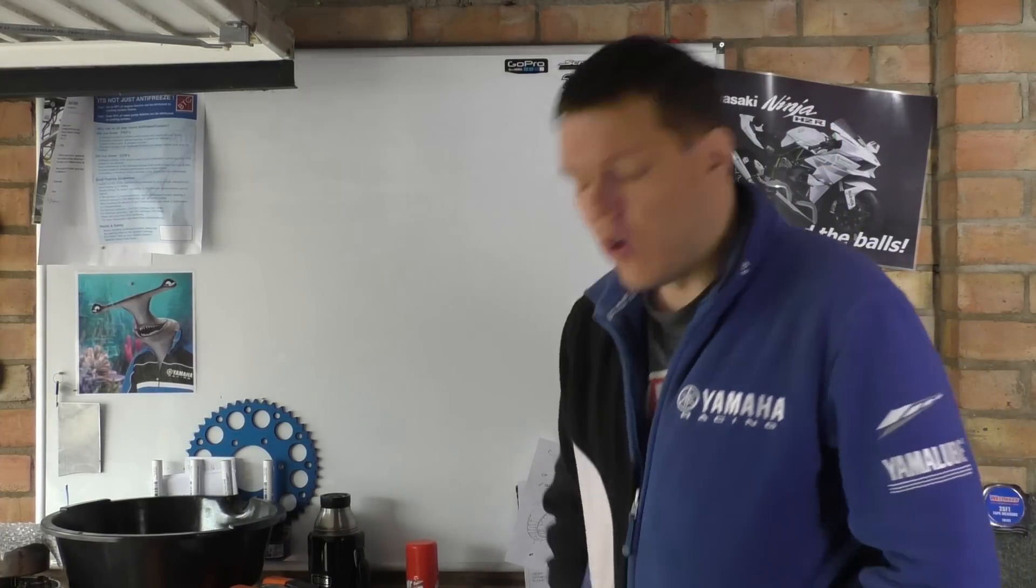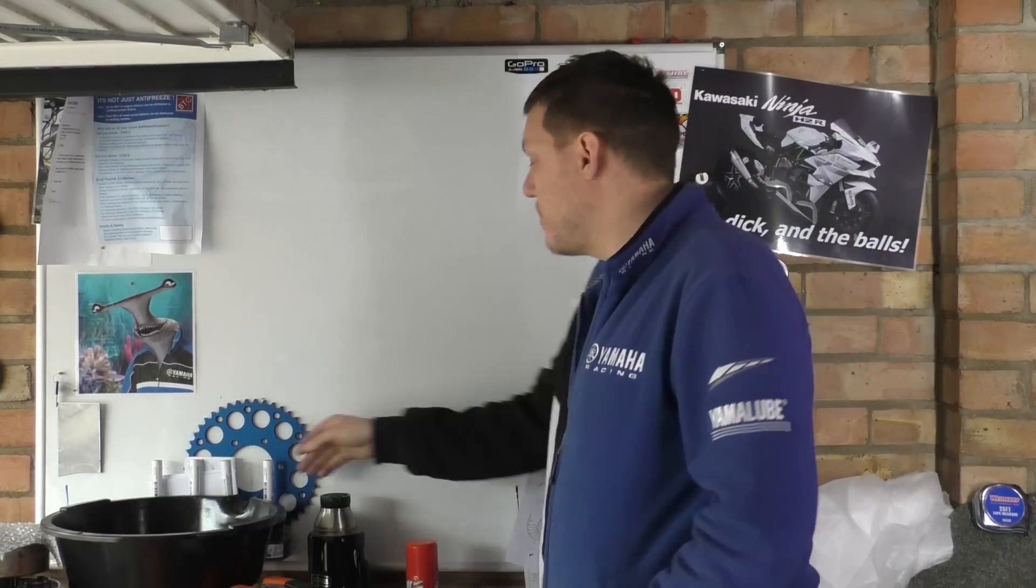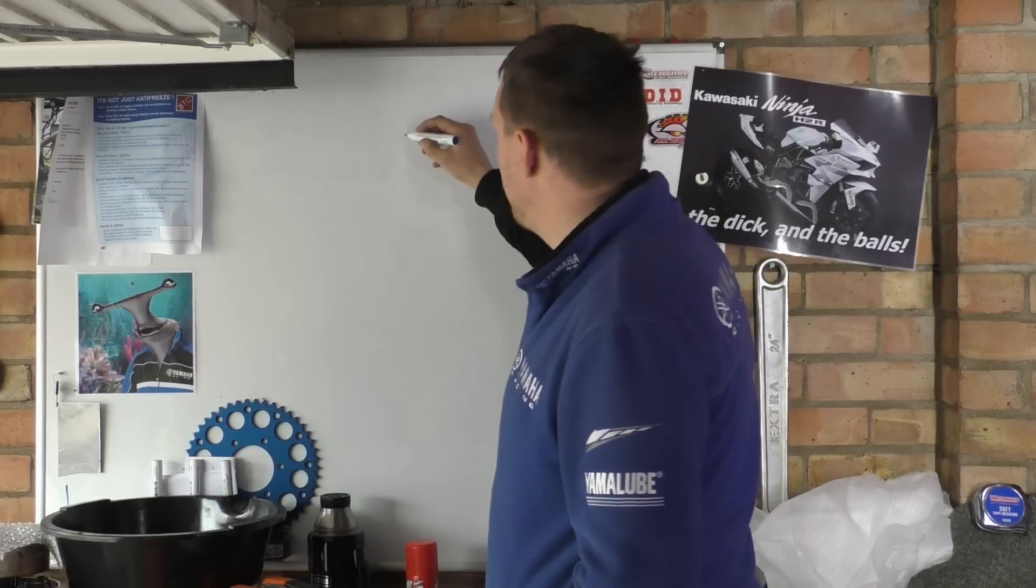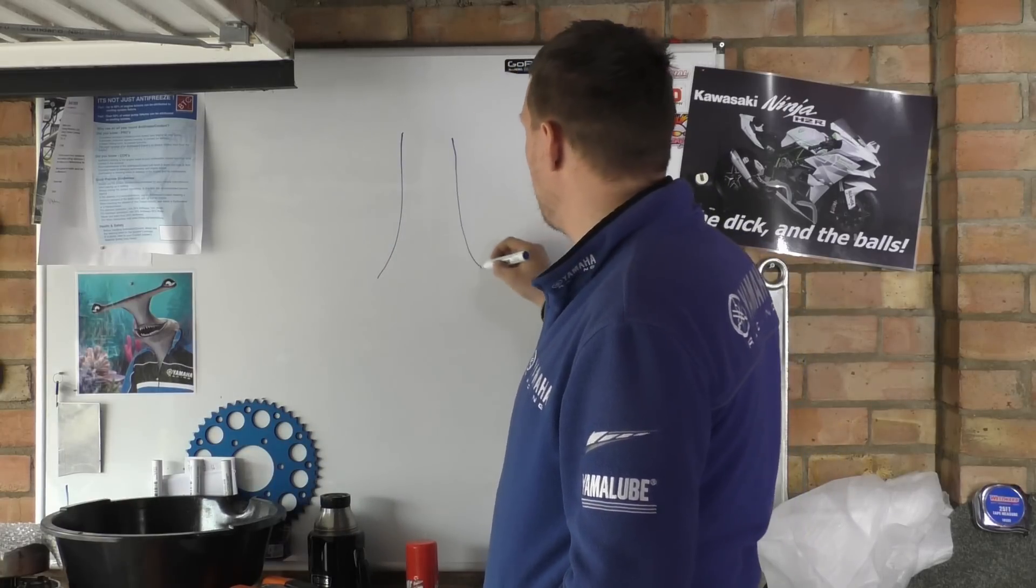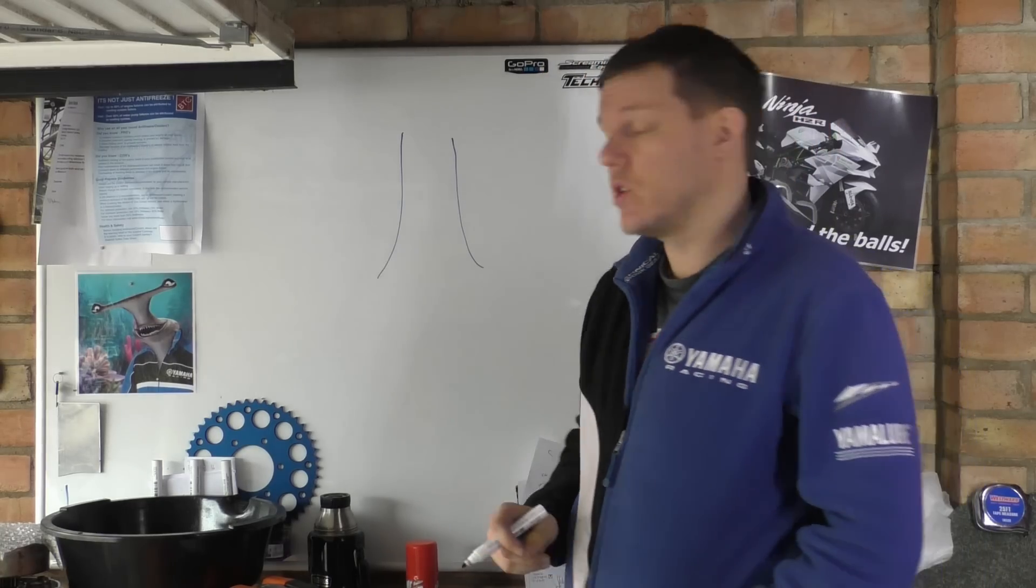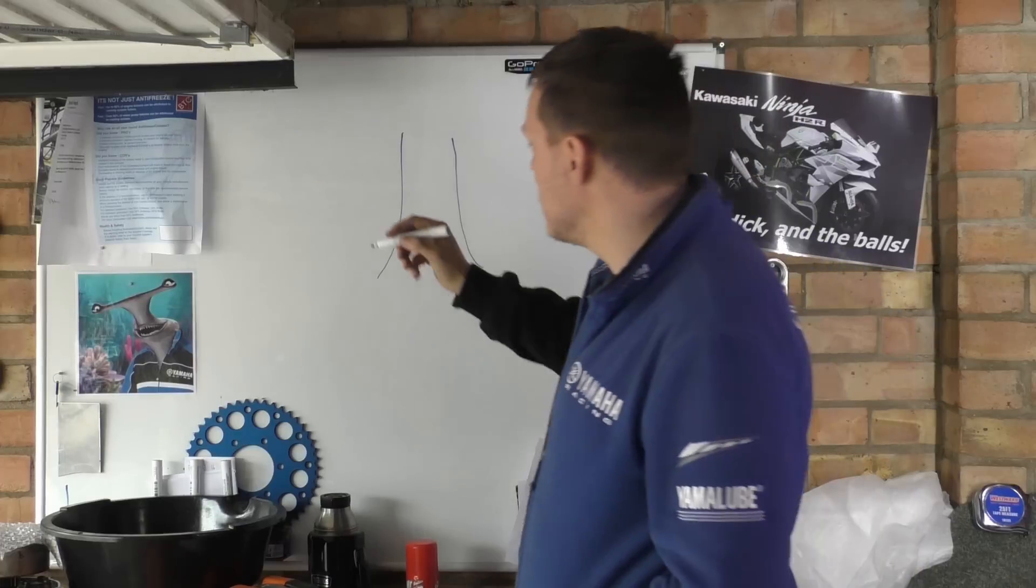My name is Matt and welcome back to the shop. Someone asked me based on the conrod video what is shot peening. Shot peening is where you get your rod, you can do it with crankshafts, you can do it with all sorts, and what you do is you blast it with metal balls.